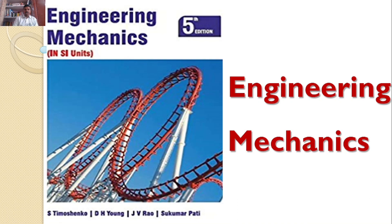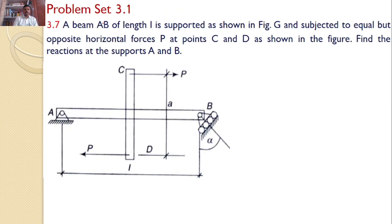Welcome to RK Tutorials — Solutions to Engineering Mechanics by Timoshenko, 5th edition. In this tutorial, we will discuss problem set 3.1, problem number 3.7. A beam AB of length L is supported as shown in the figure and subjected to equal but opposite horizontal forces P at C and D as shown in the figure. Find the reactions at the supports A and B.